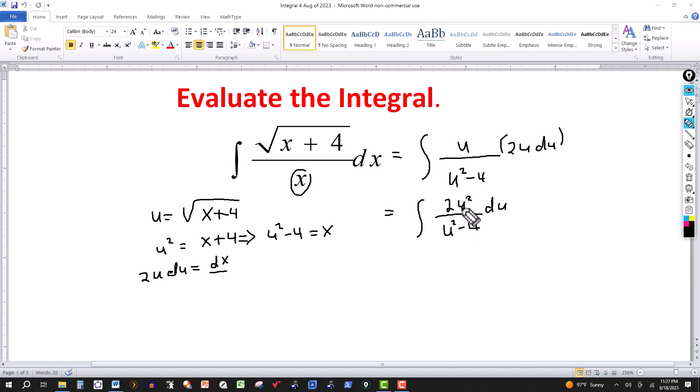And that's going to be over u squared minus 4. And the degree of the numerator and denominator are the same, so let's do some long division here.